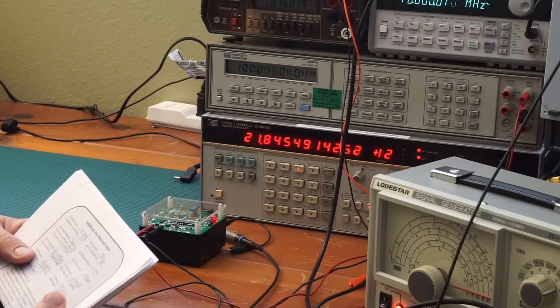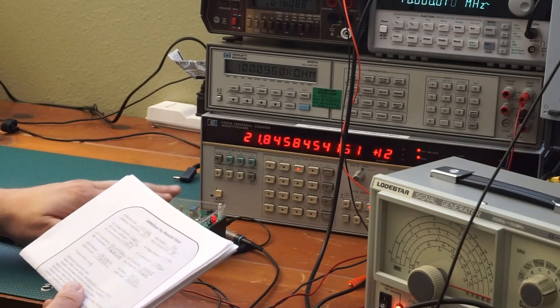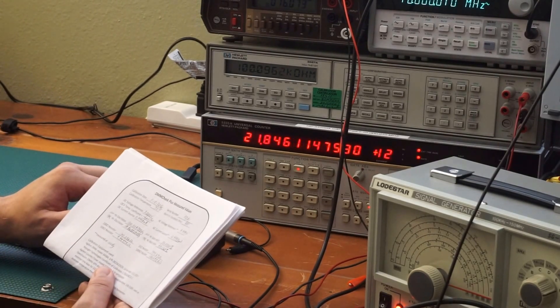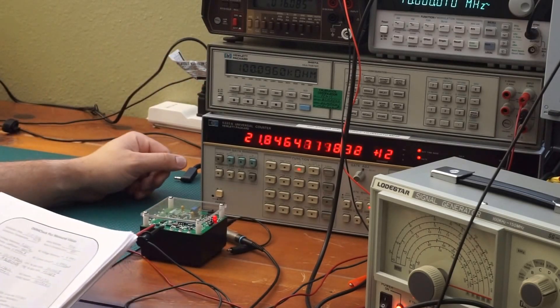Now we've moved to the 100 Kilo ohm. The stated resistance on this is 100.092. And I'm looking at 100.096.